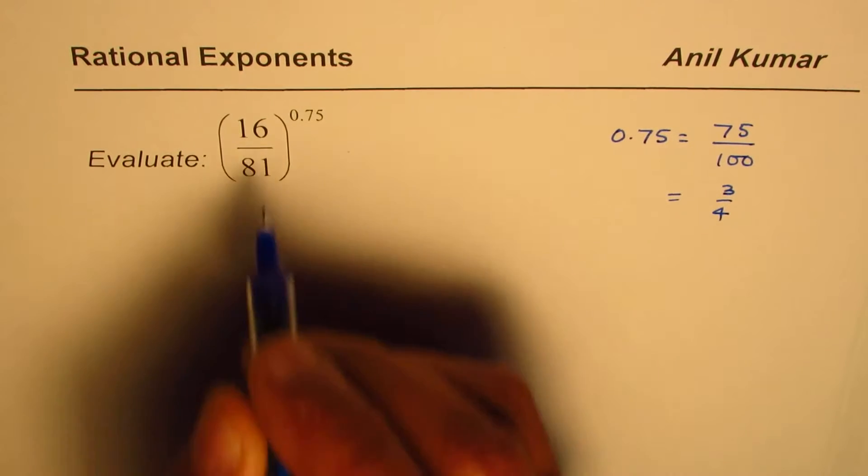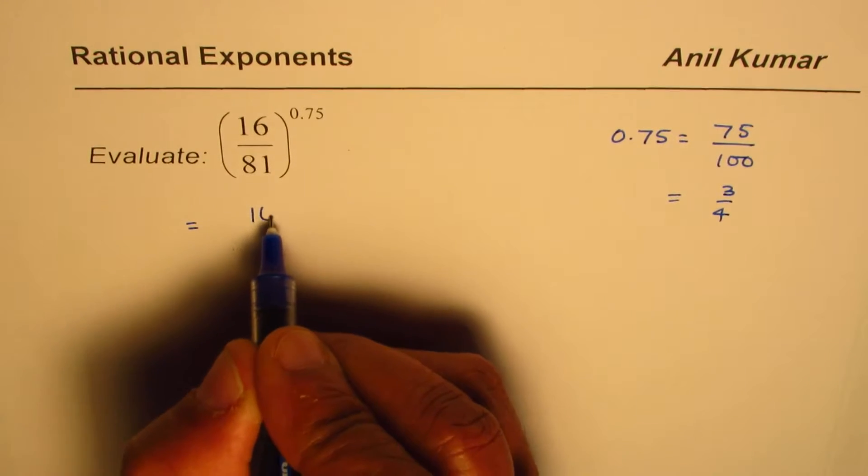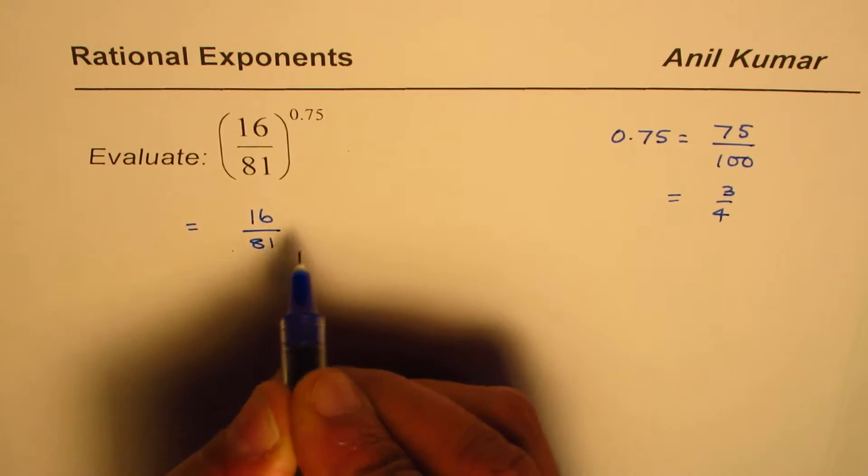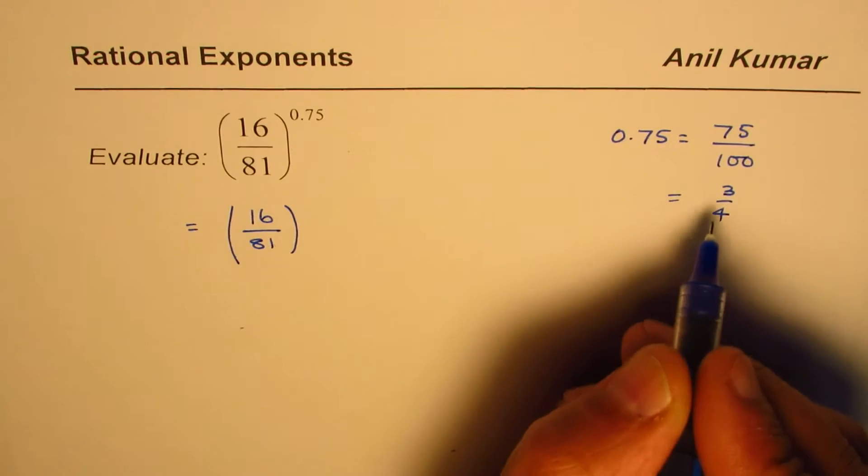So we can write this expression as equal to 16 over 81 to the power of 3 over 4.